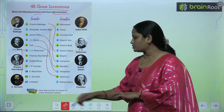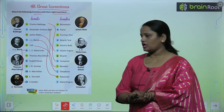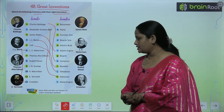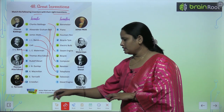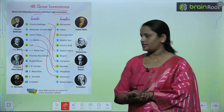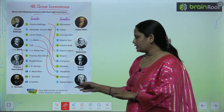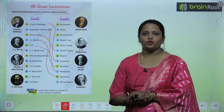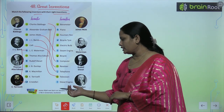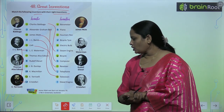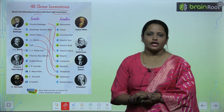James Watt was born on January 19, 1736, in Greenock, Scotland.